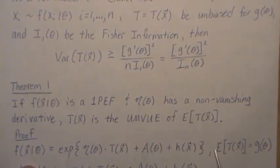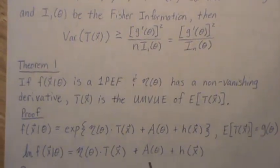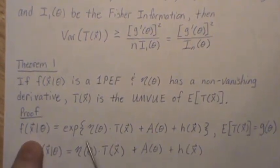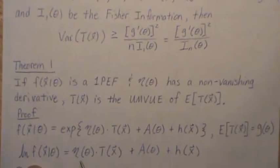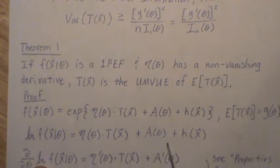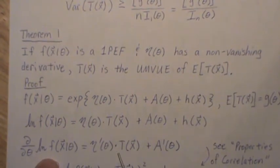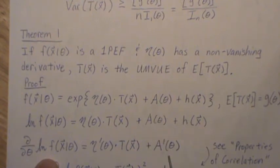To prove this — the expected value of T is G of theta, it's unbiased for G of theta — we take the log of both sides, and that cancels, so we're left with this. Now let's take the derivative of both sides: the derivative of the log likelihood, and this is constant, then the derivative of A of theta.